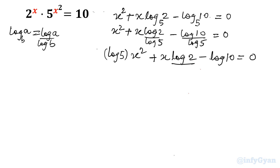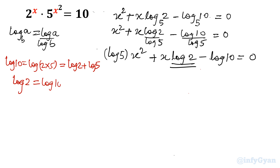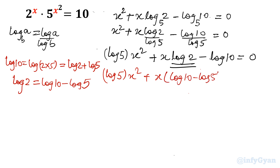Now considering log 2: we know log 10 can be written as log(2 times 5), and log(ab) equals log a plus log b, so log 10 equals log 2 plus log 5. That means log 2 can be written as log 10 minus log 5. Substituting this value into the equation: log 5 times x squared plus x times (log 10 minus log 5) minus log 10 equals 0. Opening the bracket: log 5 times x squared minus x log 5 plus x log 10 minus log 10 equals 0.